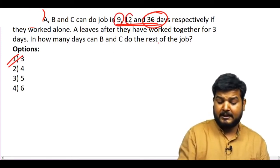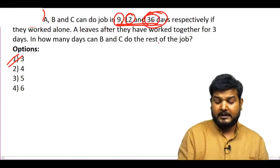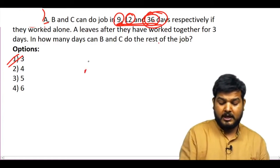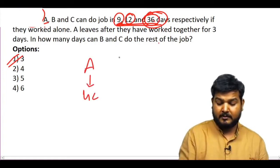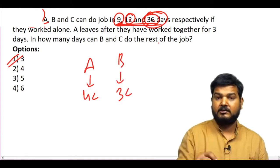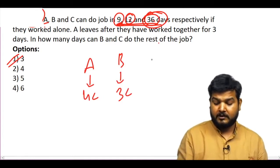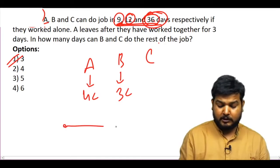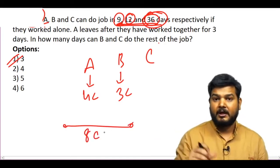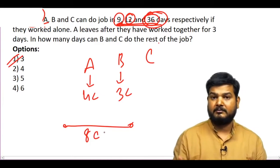What is the alternative thinking? If you look at this thing, this is 9, this is 12, this is 36. Clearly, I can see here that A's efficiency is 4 units per day. So A can replace 4C, B can replace 3C, because B's efficiency is 3 units per day.